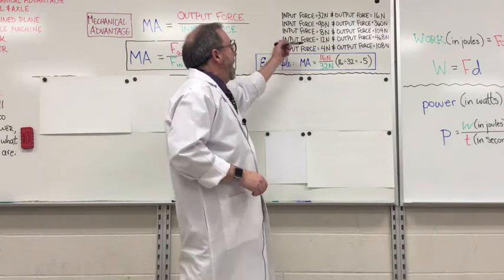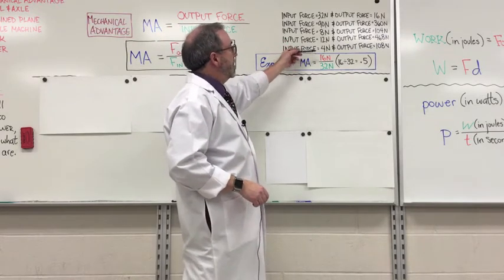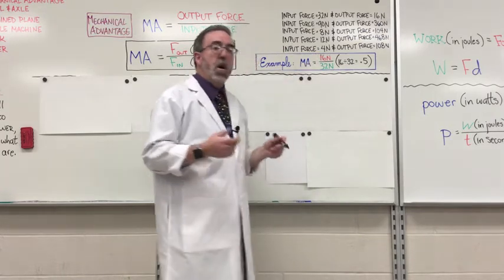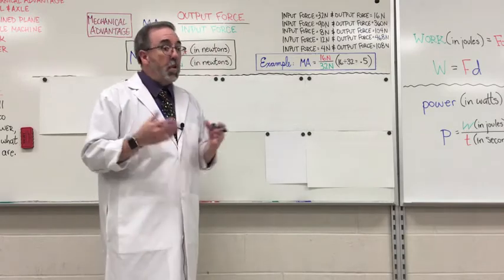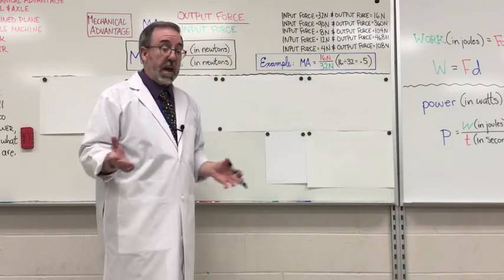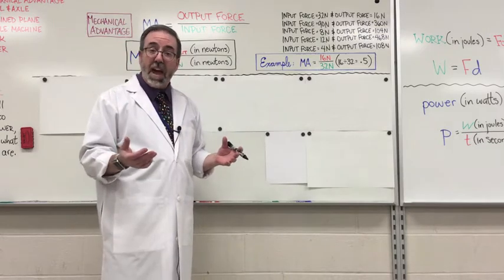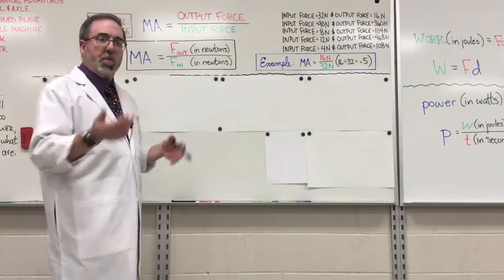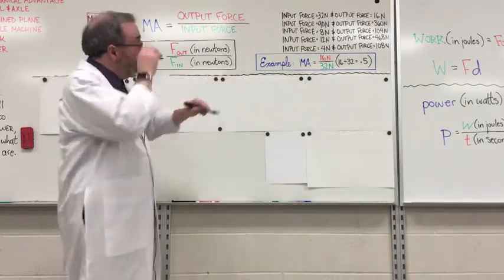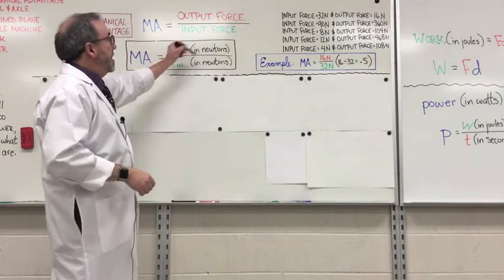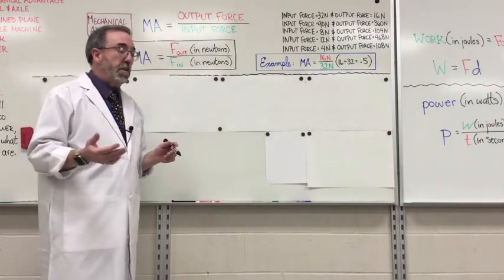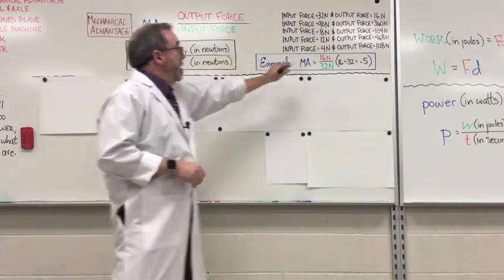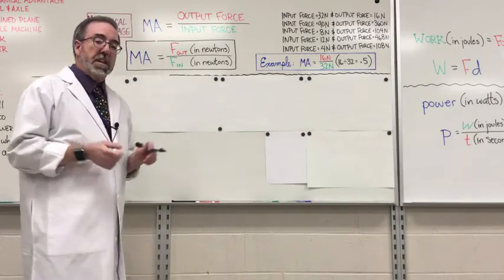With this example, mechanical advantage is 16 newtons over 32 newtons. If you do this simple math, it's just going to be 16 divided by 32, which is 0.5. Just 0.5. With this equation, we don't have to write any notation afterwards. Just like we did with work and power, we had to put joules after work and watts after power. We don't have to do that here because these newtons are going to cancel each other out.